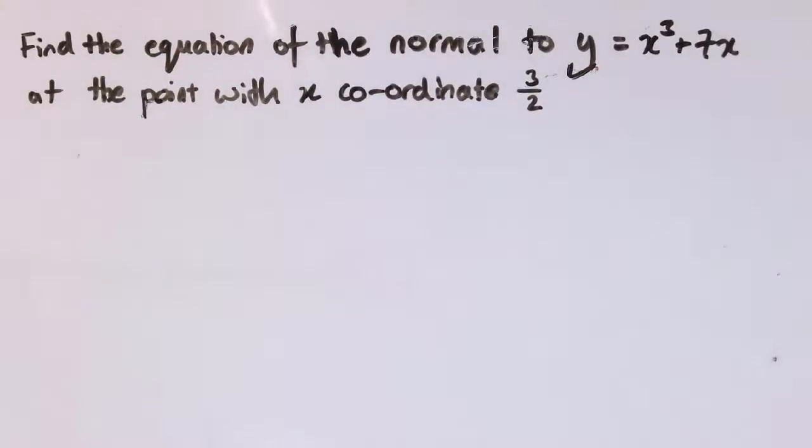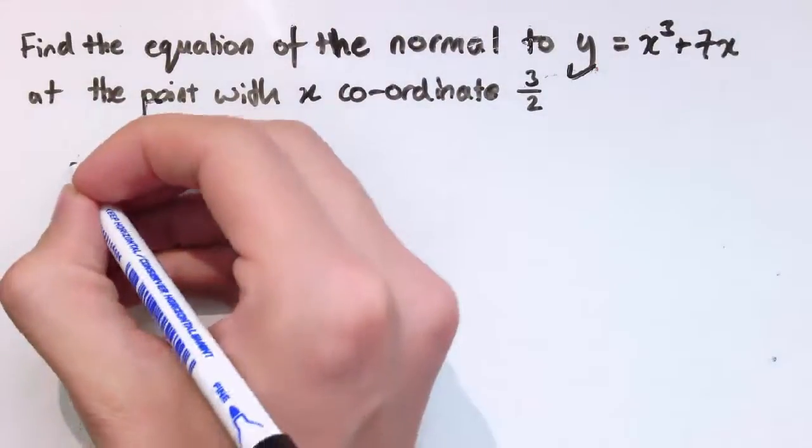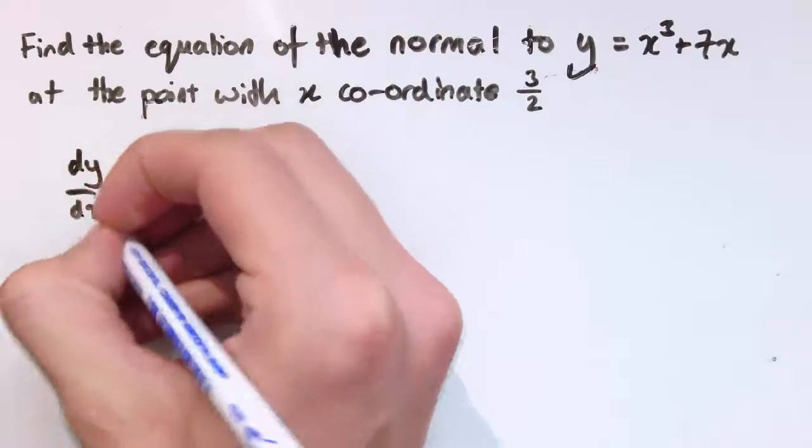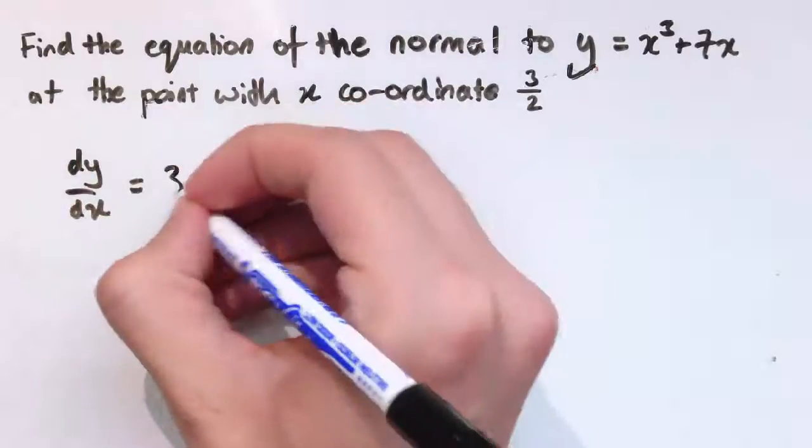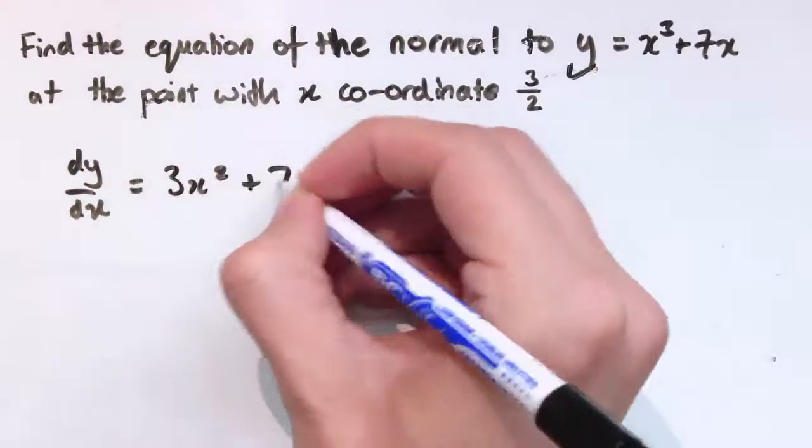I always like to make them slightly harder with fractions and things. That's what will make you really stand out and be excellent at these problems. So we'll just follow all of the steps here. I've got y equals x cubed plus 7x. So we start by working out dy by dx, and that's 3x squared plus 7.